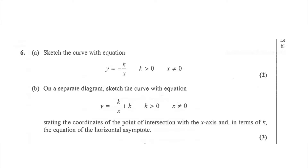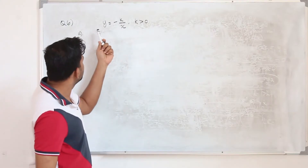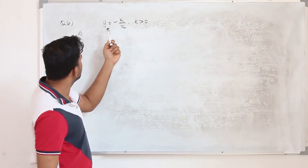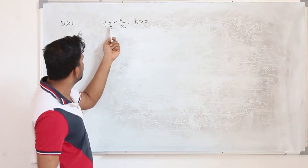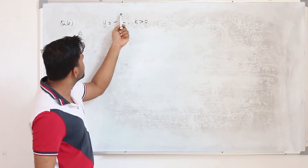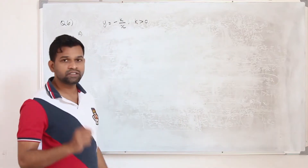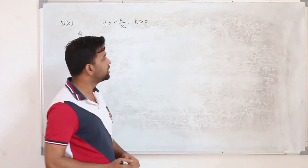Question number 6 part A: sketch the curve with the equation y equals minus k upon x, where k is greater than 0 and x is not equal to 0. The question carries two marks. Here they want you to sketch the reciprocal graph y equals minus k upon x, where k is a positive number.